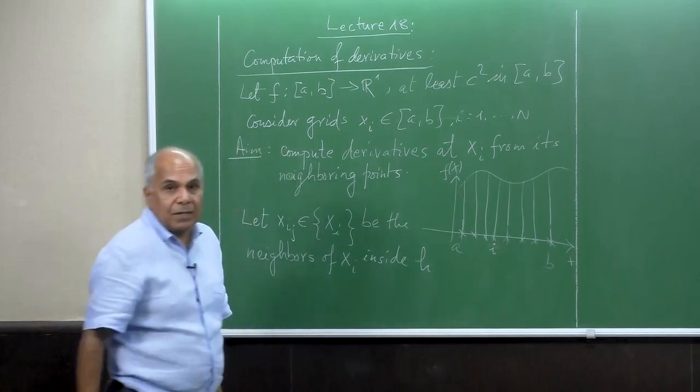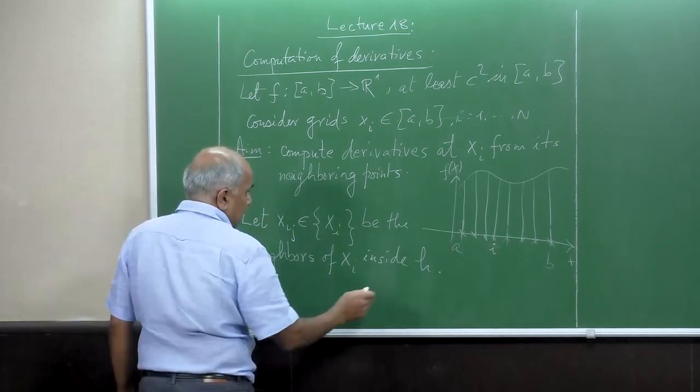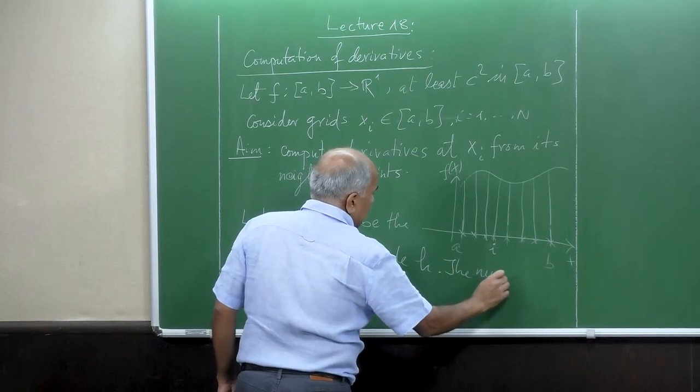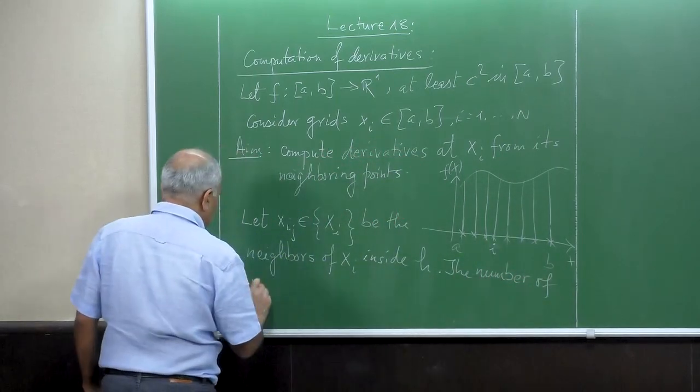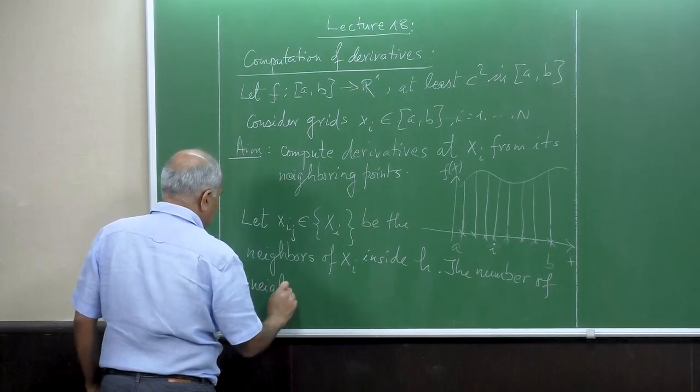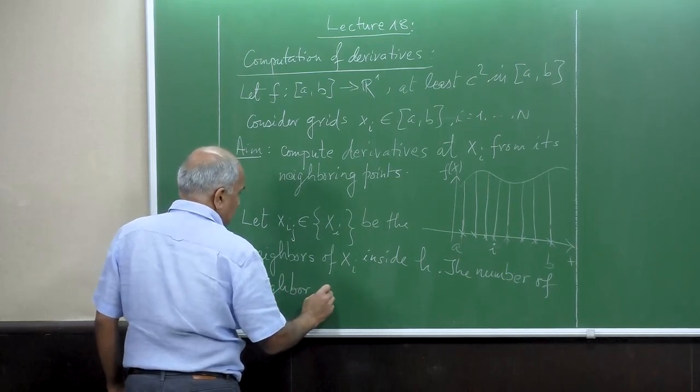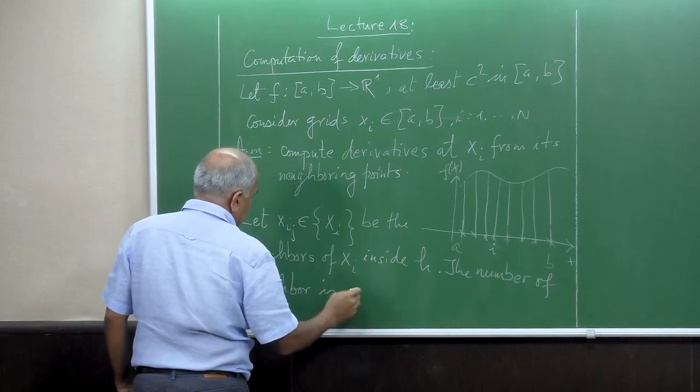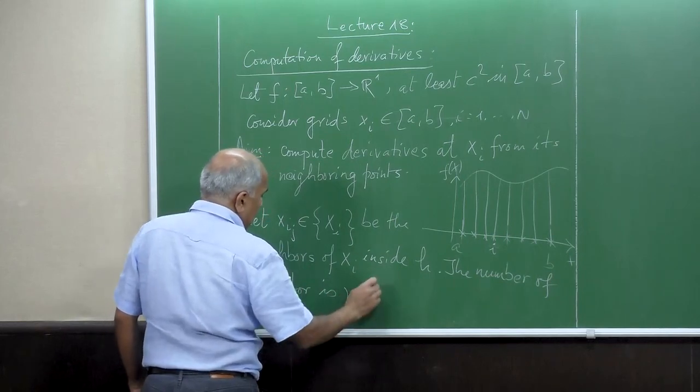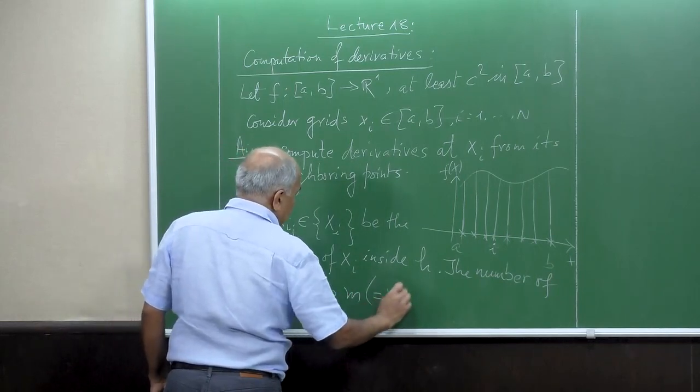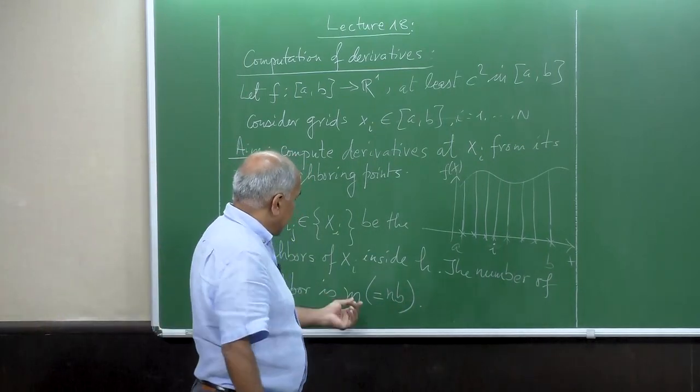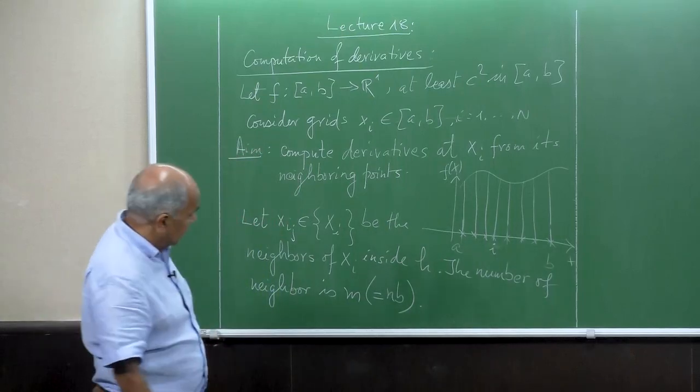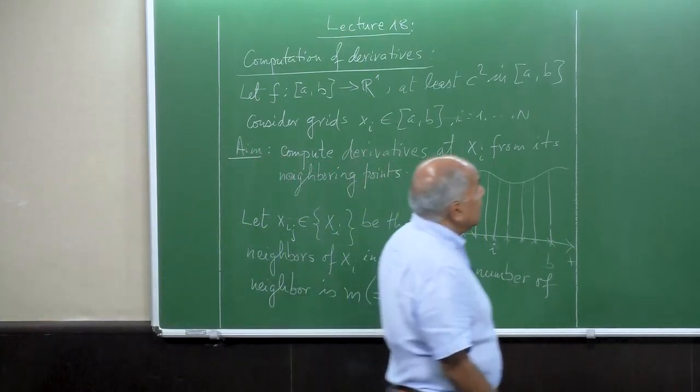Let XI,Z, which is a set of XI, be the neighbors of XI inside H. So we define the distance H, which is something like 3 times delta X. The number of neighbors is M. In our code, maybe it is NV if you like. So instead of writing two spellings, I just write M.